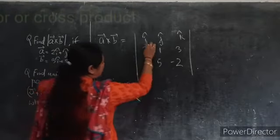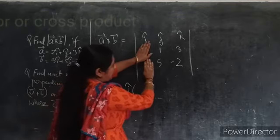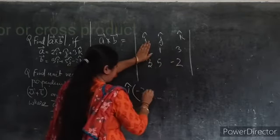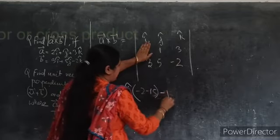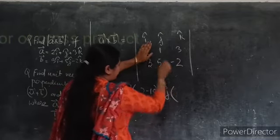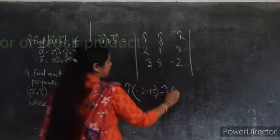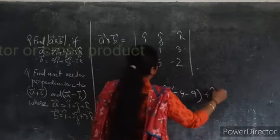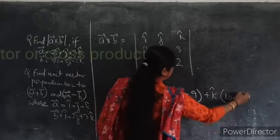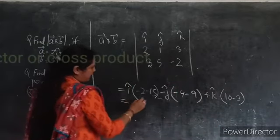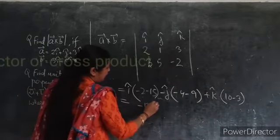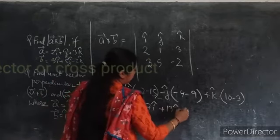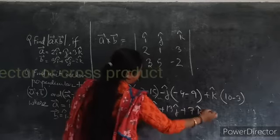Then for i cap, when you are writing the i cap component, you hide the i column, giving 1×(−2) − 3×5 = −2 − 15. Minus j cap: hide the j column, giving 2×(−2) − 3×3 = −4 − 9. Plus k cap: giving 2×5 − 1×3 = 10 − 3. So the answer is minus 17i cap plus 13j cap plus 7k cap.